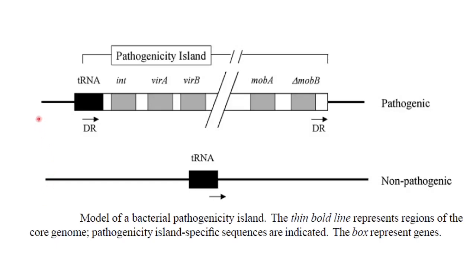This represents a model of a bacterial pathogenicity island where on the top you can see a pathogenic member, whereas on the bottom represents a non-pathogenic member. The dark lines represent the core genome of the microorganism, whereas the boxes represent some of the virulence genes which are present on the pathogenic member but absent on the non-pathogenic members.